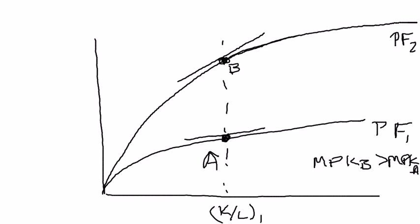We also know that the principle of diminishing marginal returns applies, which means as you add more and more capital goods, the marginal product of capital declines. So think back to that ditch digging example.